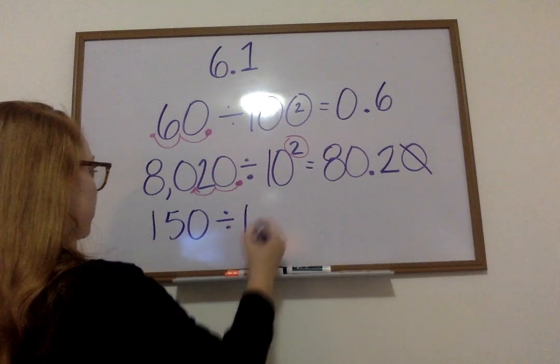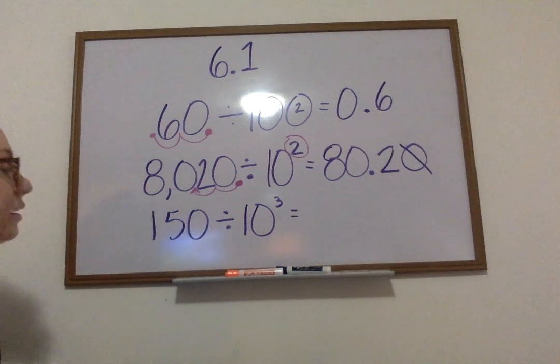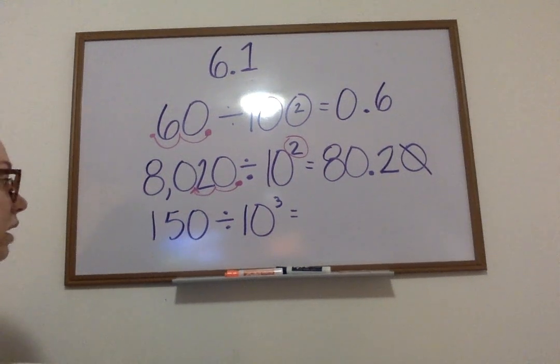150 divided by 10 to the third power. I'm dividing by a number of 10. And so, I know my number is going to get smaller. My decimal is going to move to the left. Once again, I don't see my decimal.